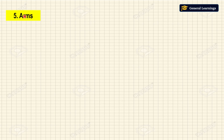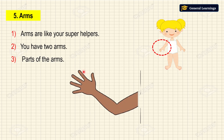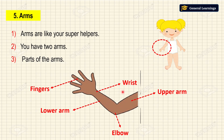Next we will see about arms. Arms are like your super helpers. We have two arms. Let us see parts of the arm: upper arm, lower arm, elbow, fingers, wrist, palm.